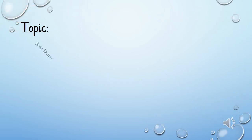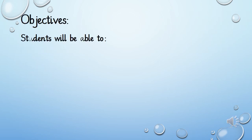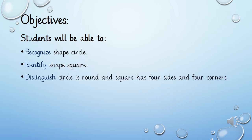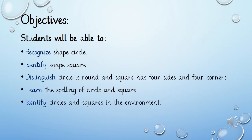In this lesson, we are going to learn about two basic shapes: circle and square. The objectives of today's lesson are: students will be able to recognize the shape circle, identify the shape square, distinguish that circle is round and square has four sides and four corners, learn the spellings of circle and square, identify circles and squares in the environment, and trace and draw circles and squares.